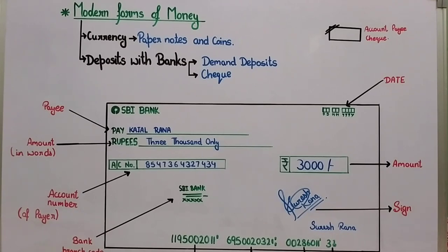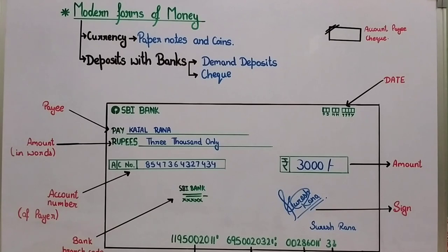Accepting deposits is the main function of the bank. We go to the bank and deposit our money there. If we already have a bank account, we deposit the money in the bank. The bank accepts our deposits and, besides that, the bank also pays interest on our deposits.